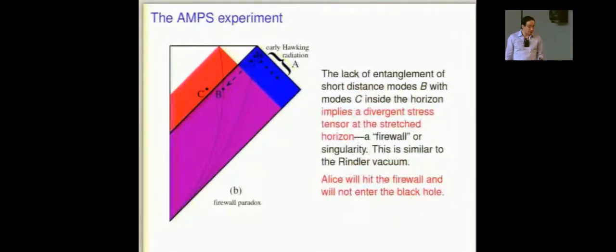But it's an extremely radical conclusion. The lack of entanglement of short-distance modes across the horizon implies a divergent stress tensor at the stretched horizon. Think of the Rindler vacuum. This is similar to being in the Rindler vacuum. When you compute the stress tensor, there's a sort of delta function singularity at the horizon. This is true for any pure Rindler status, as Rammstronk recently showed and his collaborators.